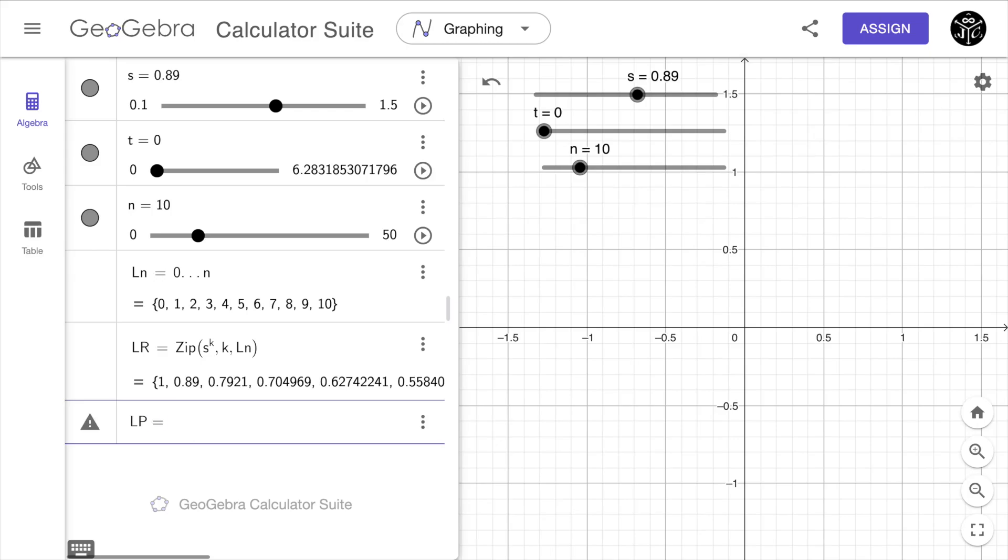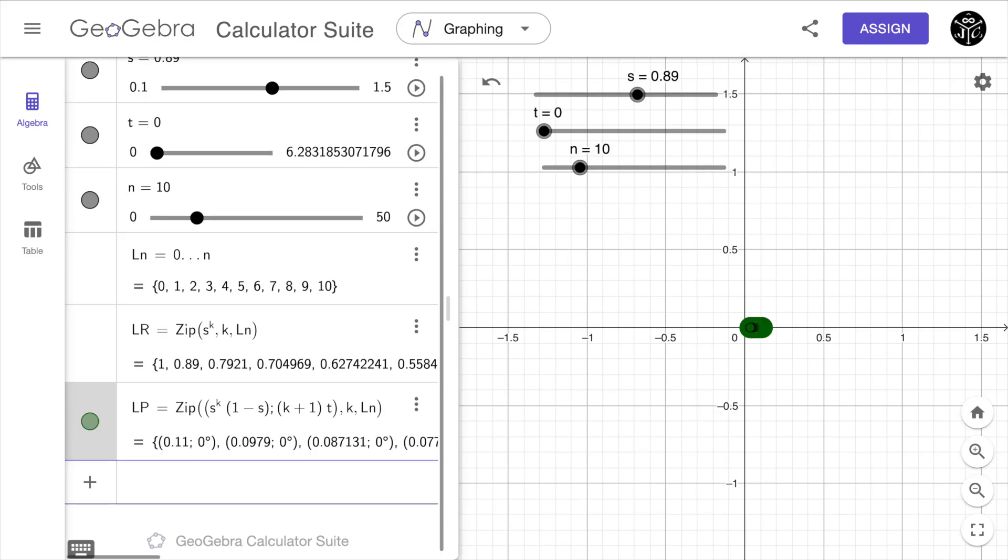Now I need to define the list of polar points. I'm going to define it as lp equal to the zip and here I'm going to define my polar point with radius s to the power of k times one minus s semicolon k plus one times t where t is the angle theta where k is the variable that belongs to the list ln. So here you can appreciate all the points being plotted and if we move the slider you can see how they rotate.